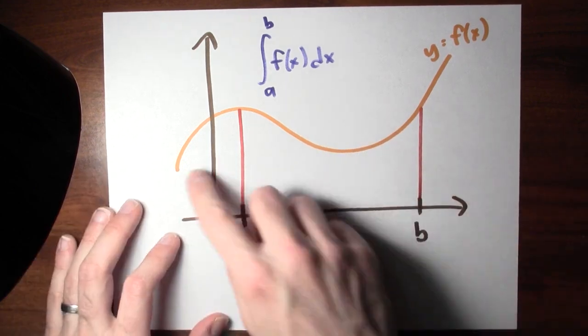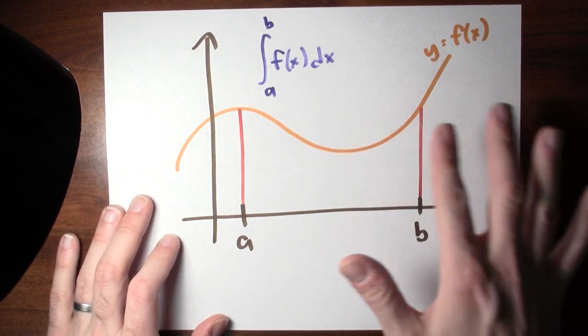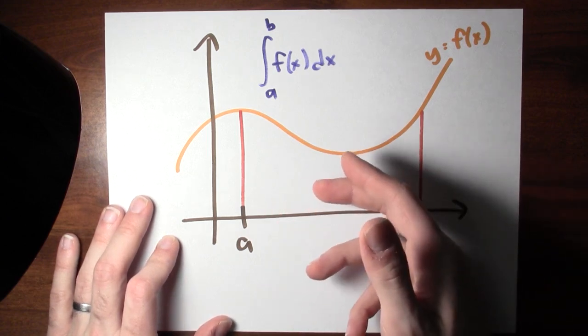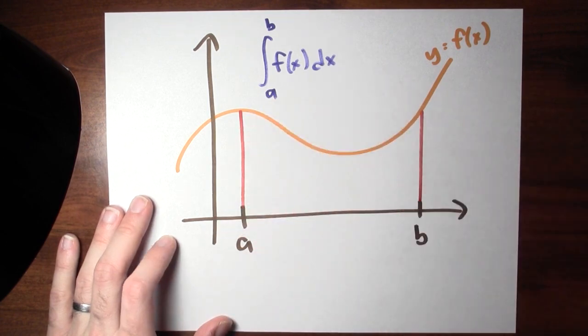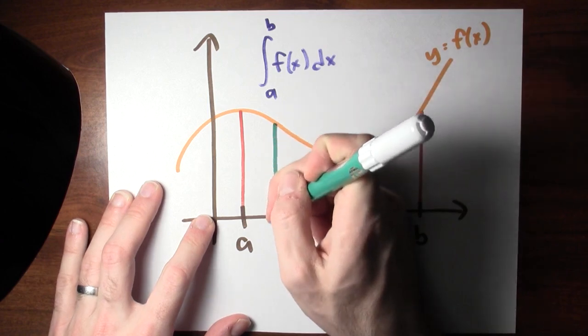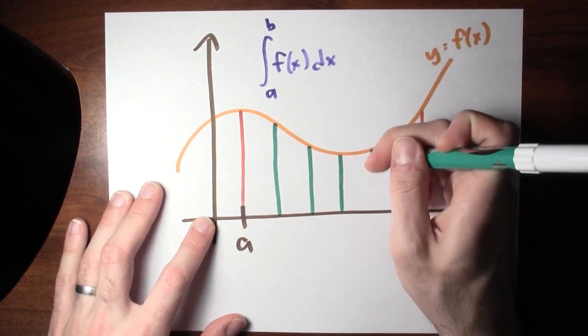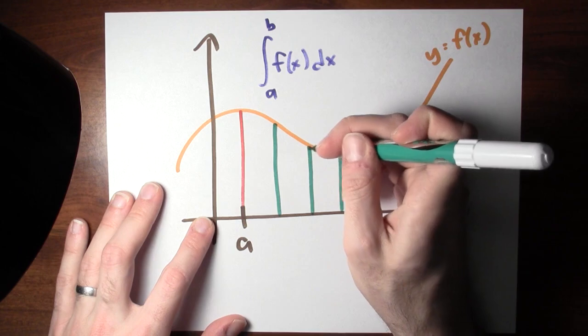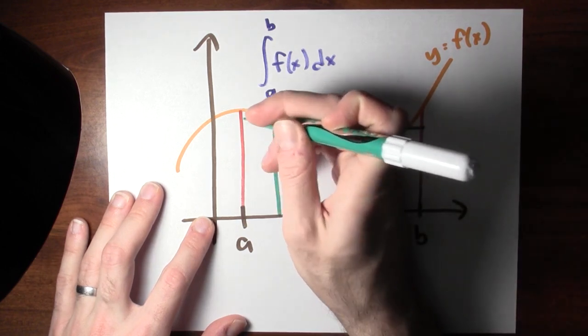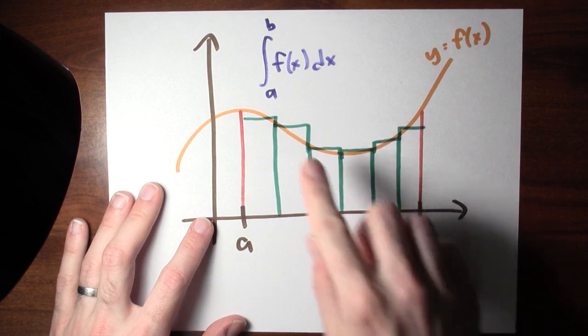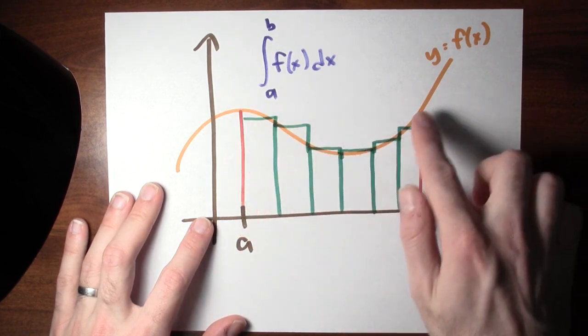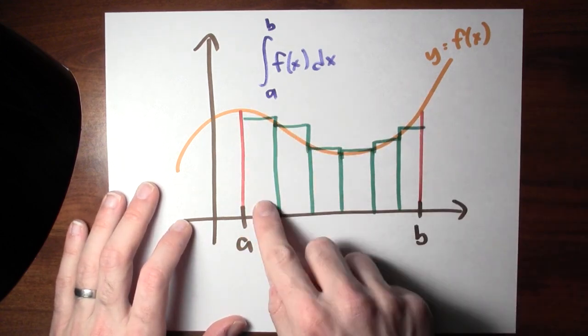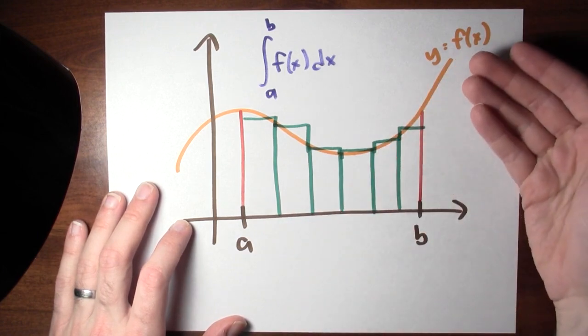But what does that even mean? Because this region's got this curved top, it makes it very complicated. So I define this area by taking a limit of approximations. I get those approximations by cutting this region up into rectangles. And if I make those rectangles thin enough, I get better and better approximations to what I'm hoping to be the real area under the curve. So I'll define the area under the curve to be the limit of these approximations as the approximations get better.